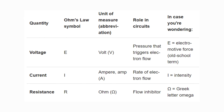In the Ohm's Law triangle, at the top we have voltage, whose symbol is E — E stands for electromotive force — its unit of measurement is volts, and its role in circuits is the pressure that triggers electron flow. At the bottom we have current and resistance. Current's symbol is I — I stands for intensity — its unit of measurement is ampere, and its role is the rate of electron flow. Resistance's symbol is R, its unit of measurement is ohm, and its role in circuits is as a flow inhibitor.